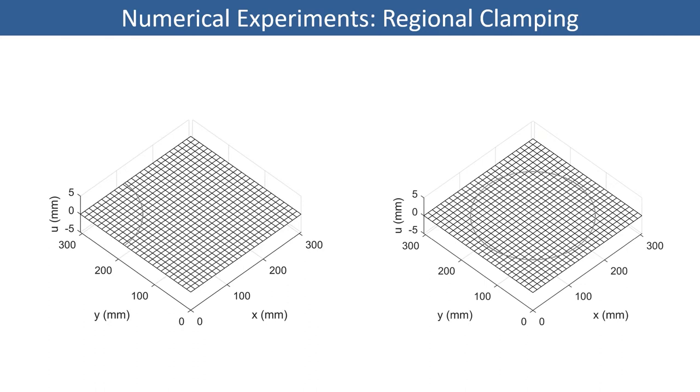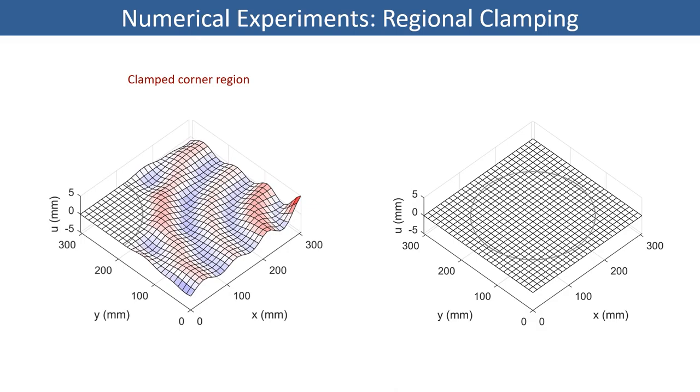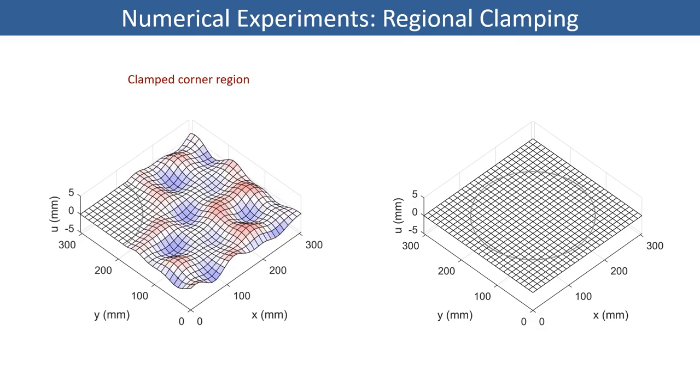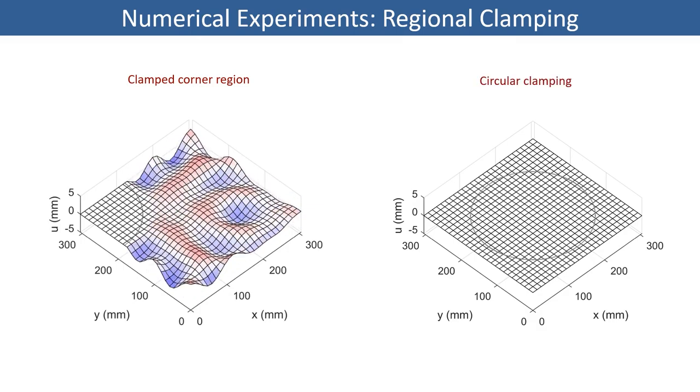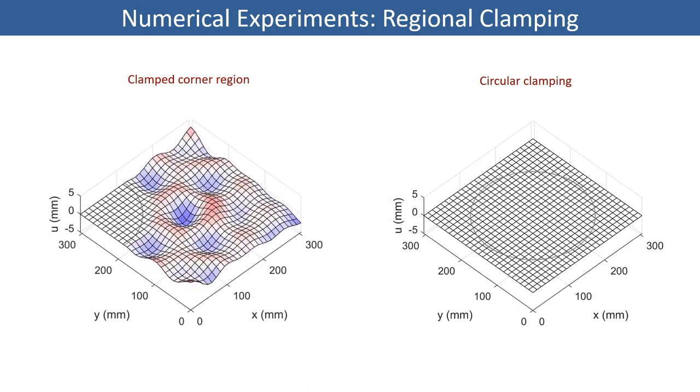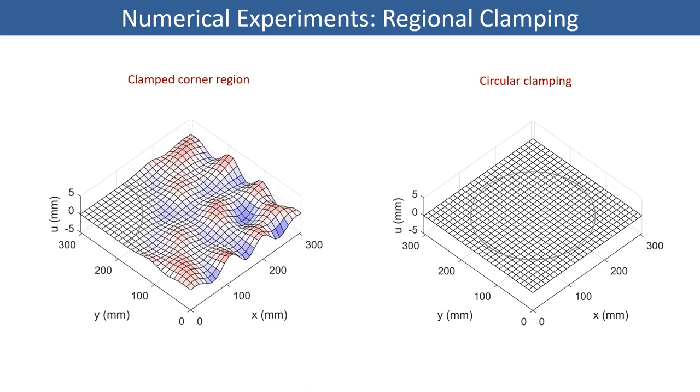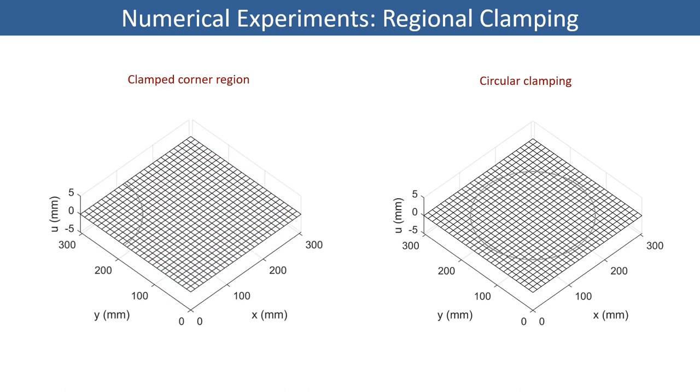So one of the things we can do with the model is simulate regional clamping. For example, here on the left, a square plate is clamped over a corner region using a very high k-value. So when waves arrive at the edge of that region, they bounce off. On the right of the slide, we've clamped a region lying outside the indicated circle, thus in effect simulating a clamped circular plate.